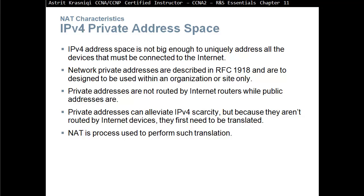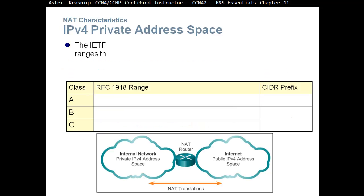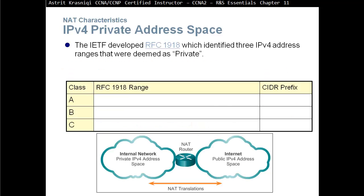Private addresses can alleviate IPv4 scarcity, but because they are not routed by internet devices they first need to be translated. NAT, or Network Address Translation, is the process used to perform such translation. RFC 1918 identifies three IPv4 address ranges that were deemed as private, and you have to remember what RFC 1918 does.